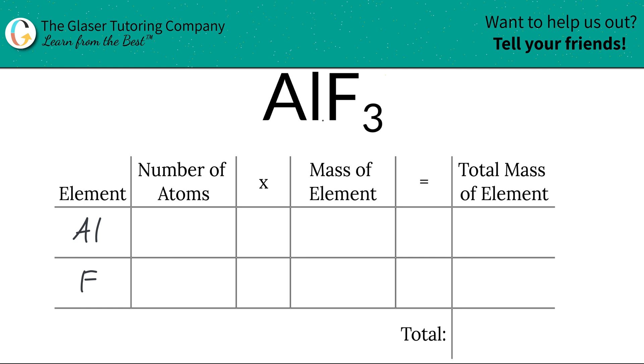At the bottom of aluminum there is an invisible one, and that means we have one aluminum atom in aluminum fluoride. Then the subscript of fluorine is a three, so that means that we have three fluorine in aluminum fluoride.